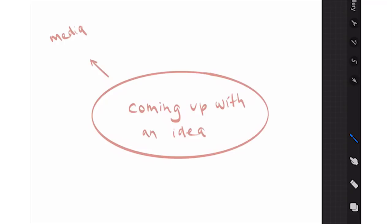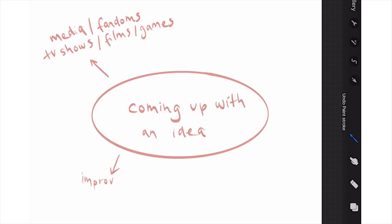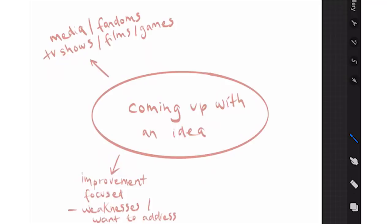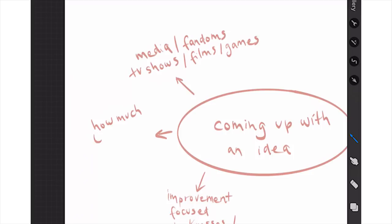The first part of coming up with a drawing is thinking of an idea. I get asked a lot where I get my inspiration from, so I'll show you some of the ways. The first one is pretty obvious: media and fandoms — I love drawing fan art, especially from films, TV shows, and video games. Two is improvement-based drawings — these focus on my weaknesses. If I want to improve drawing my hands, I'd do a drawing that focuses on hands.